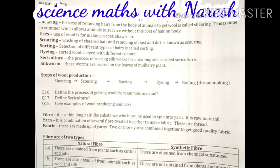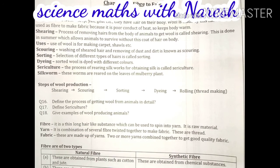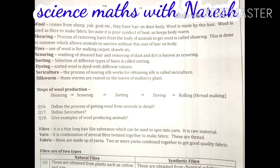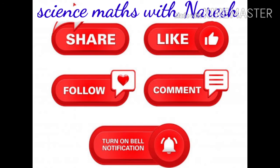The steps of wool production discussed are: shearing, scouring, sorting, dyeing, and the last step is rolling — converting the threads into rolls to collect them at a single place. Review questions: (1) Define the process of getting wool from animals in detail. (2) Define sericulture. (3) Give examples of wool-producing animals.